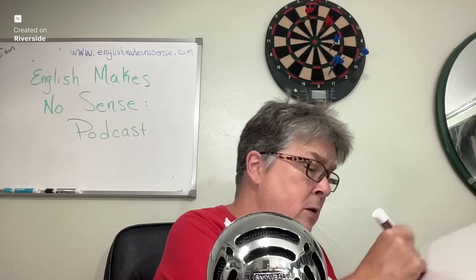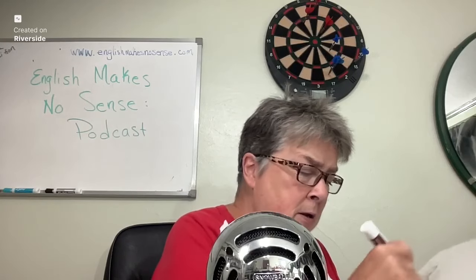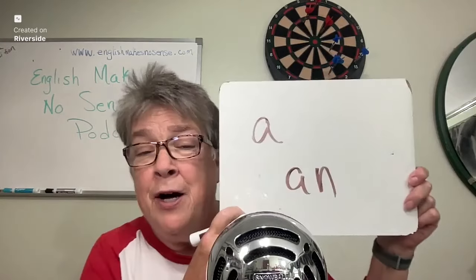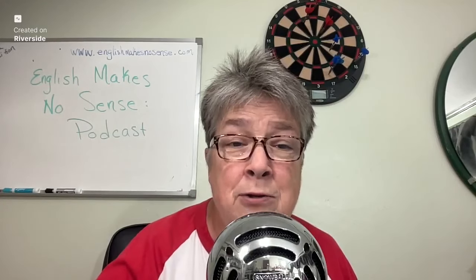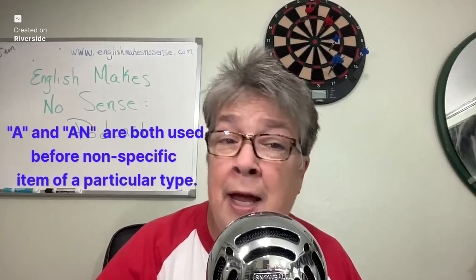Let me write those out for you. A is merely the letter A. AN is A-N. These tiny words can be surprisingly tricky, so let's break them down and understand how to use them correctly. Both A and AN are indefinite articles used before nouns. Remember, nouns are persons, places, or things.